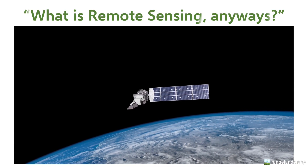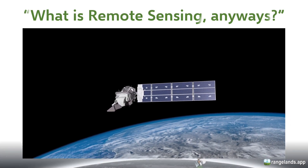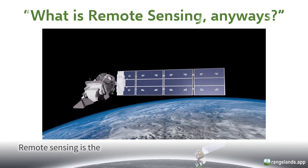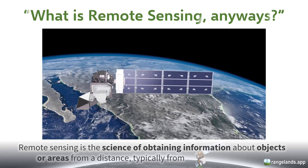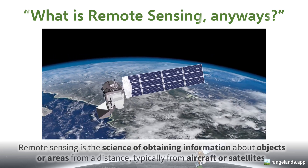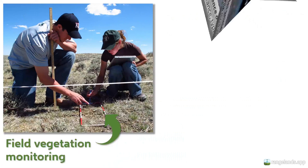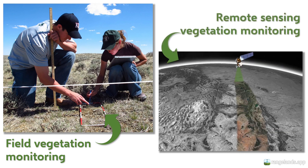Let's start by defining just what we mean by remote sensing. Remote sensing can be defined as the science of obtaining information about objects or areas from a distance, typically from aircraft or satellites. Essentially, remote sensing is just another way of measuring rangelands. Most often when we think of rangeland vegetation monitoring, we think of a team collecting vegetation data using transects on location in the field. Field-based methods are irreplaceable, but they have their own limitations that remote sensing can help to overcome.